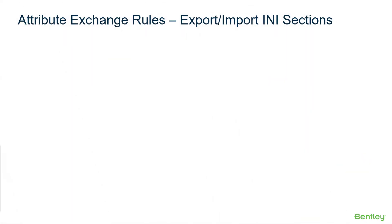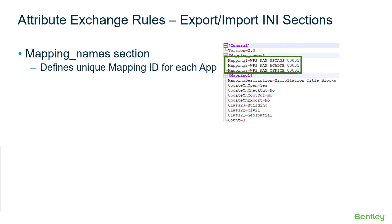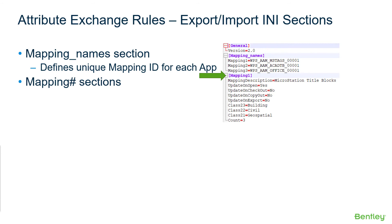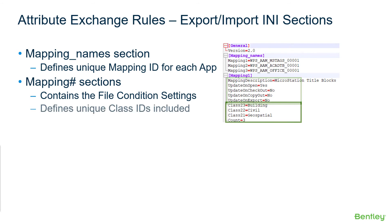Let's look at the .ini sections for an exported file. At the top there is a general section, which contains the version, and then a mapping_name section, which uniquely defines the mapping ID for each application. In this example, mapping 1 is the MicroStation tag, mapping 2 is AutoCAD title block, and mapping 3 is Microsoft Office. Then there is a mapping with a unique number section, which should match the unique mapping IDs above. This section contains the file condition settings — whether to update during open, checkout, copy out, or export — and also includes unique class IDs linked to this mapping. In this example, there are three linked classes for building, civil, and civil geospatial.